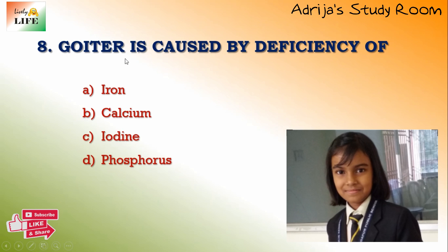Next question: goiter is caused by deficiency of iron, calcium, iodine, or phosphorus. Goiter is a disease caused by deficiency of which mineral? It is caused by deficiency of iodine. So the answer is C — goiter is caused by deficiency of iodine.